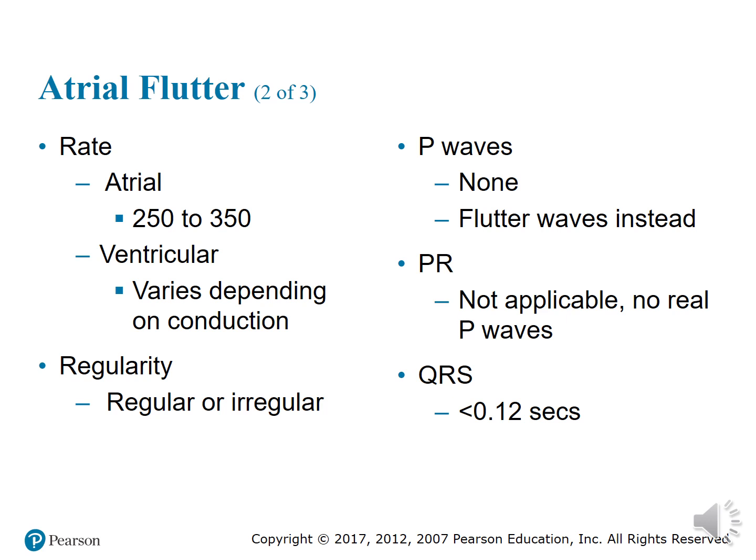So therefore you have no PR interval because you have no defined P wave. Your QRS, when the AV node does let an impulse go through, should be less than or equal to 0.12 seconds.